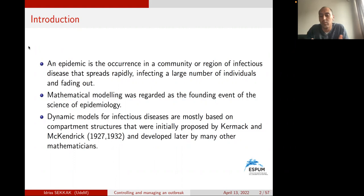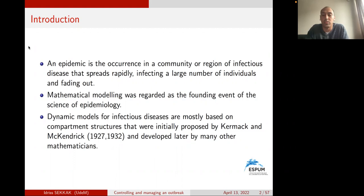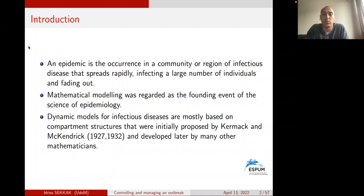During the 1854 Broad Street cholera outbreak in London, mathematician John Snow identified the source of the outbreak as the public water pump on Broad Street. He illustrated the connection between the water pump and the cholera cases, and as a result it was concluded that the principal cause of cholera was not miasmata but a germ — and mathematical modeling was regarded as the founding event in the science of epidemiology.